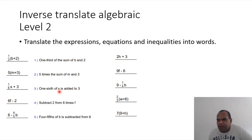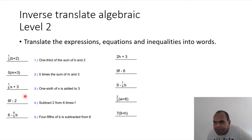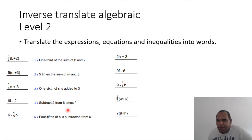Number two is 'five times the sum of m and three.' As you can see, 'one-sixth of s is added to three.' Here 'one-sixth of s' — you don't include the parenthesis idea because it doesn't say 'sum of.' The idea is just 'added to three' at the finish.